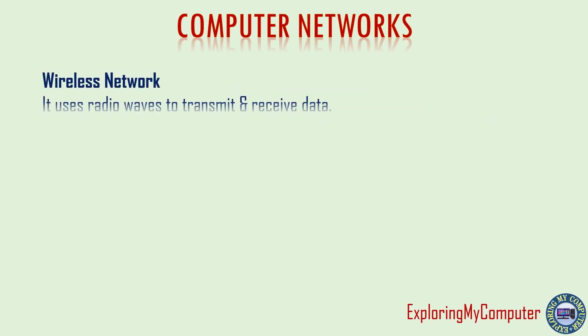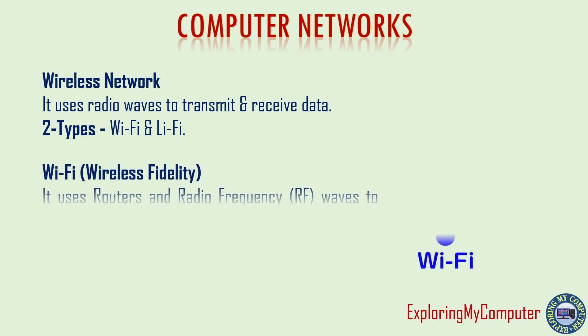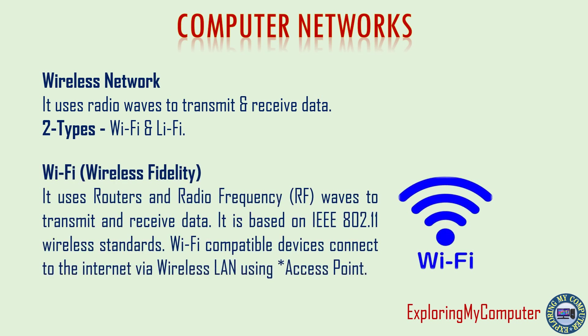Wireless network uses radio waves to transmit and receive data. Two types: Wi-Fi and Li-Fi. Wi-Fi (Wireless Fidelity) uses routers and radio frequency (RF) waves to transmit and receive data. It is based on IEEE 802.11 wireless standards. Wi-Fi compatible devices connect to the internet via wireless LAN using an access point.